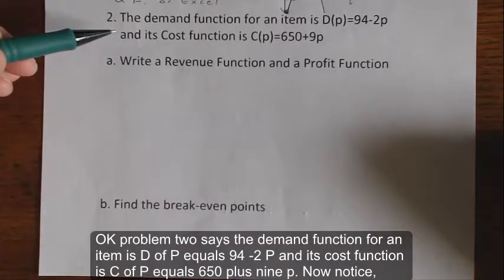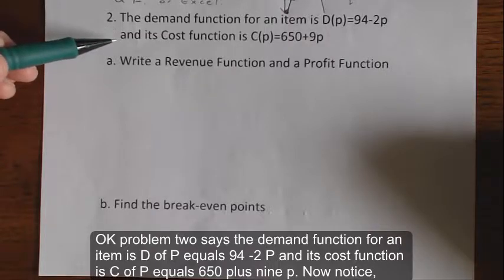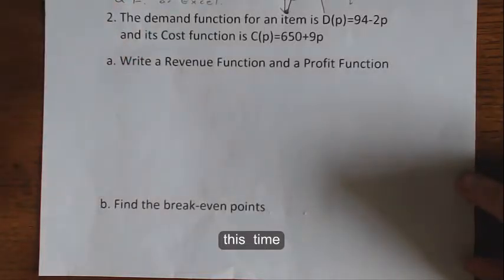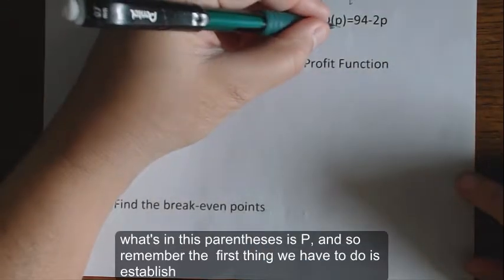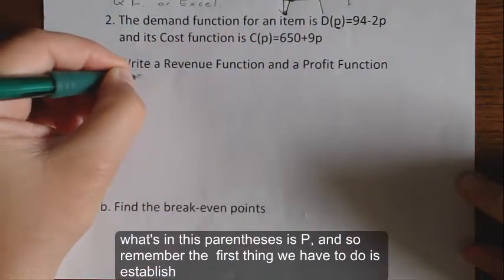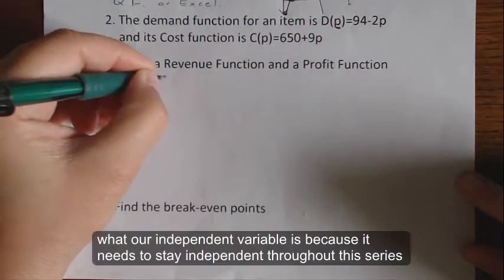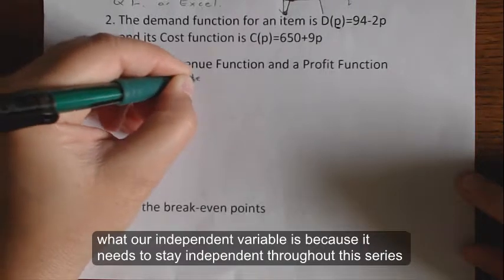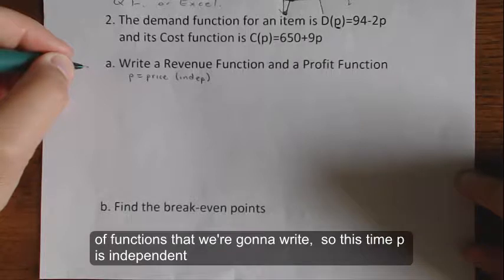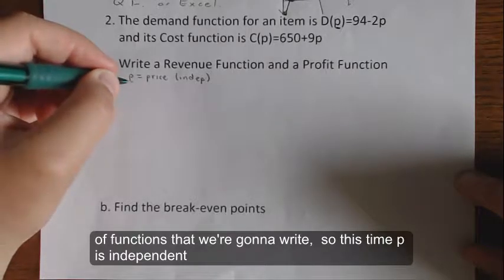Problem two: the demand function for an item is D(p) = 94 - 2p, and its cost function is C(p) = 650 + 9p. Notice this time what's in the parentheses is p. The first thing we have to do is establish what our independent variable is, because it needs to stay independent throughout the series of functions that we're going to write. So this time p is independent.